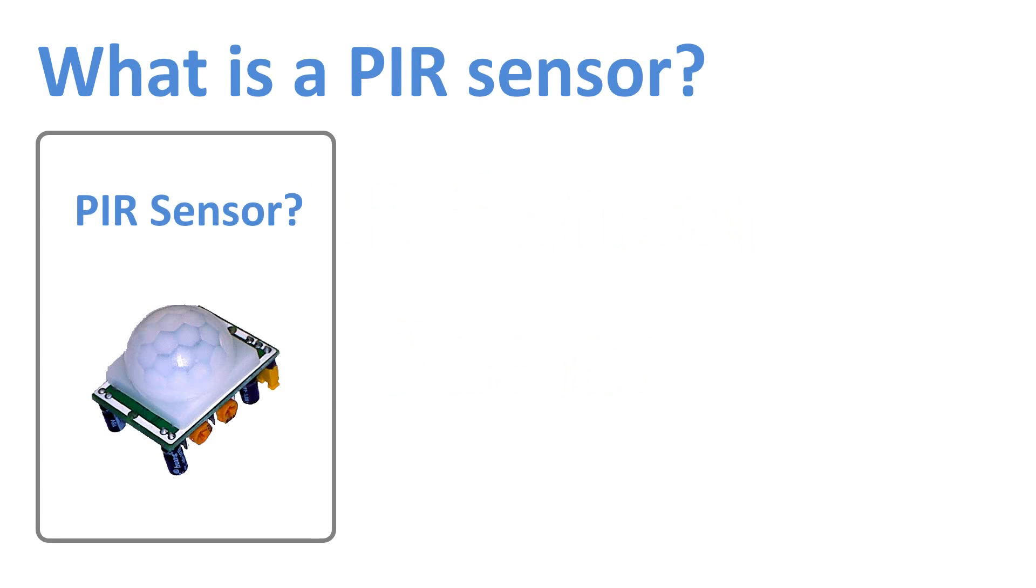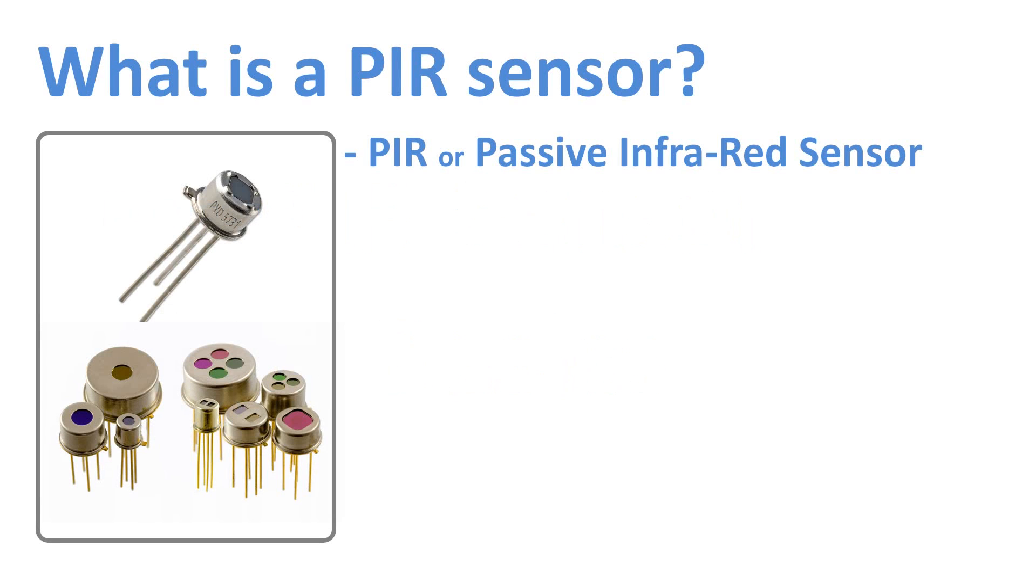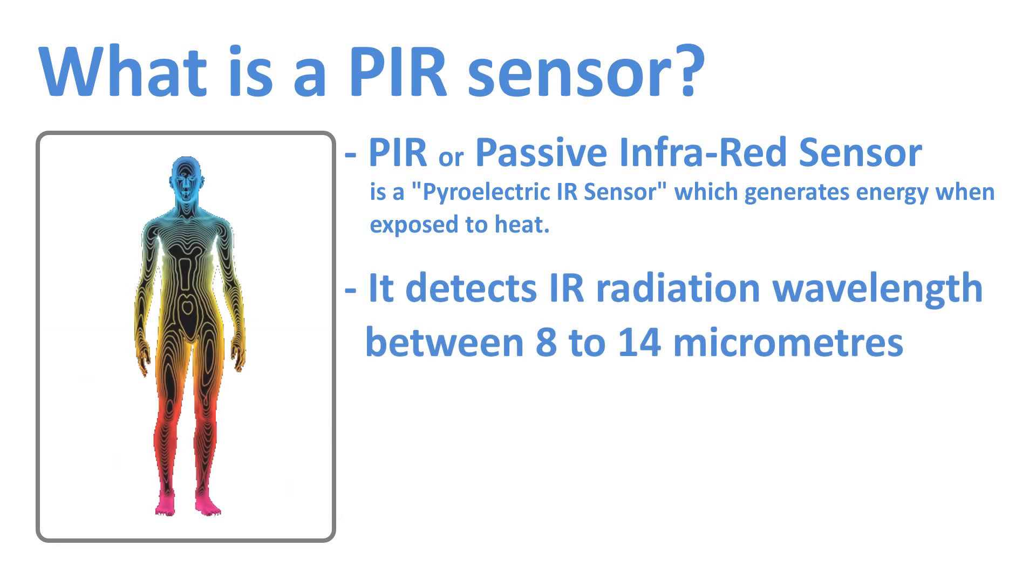What is a PIR sensor? PIR, or passive infrared sensor, is a polyelectric IR sensor which generates energy when exposed to heat. Everything emits low level of radiation. The hotter the object is, the more radiation is emitted.